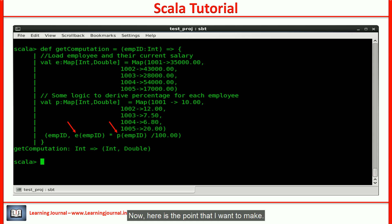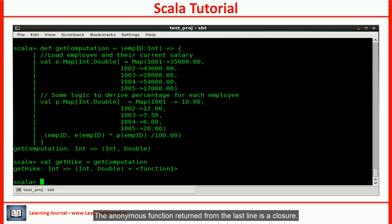Now, here is the point that I want to make. The anonymous function returned from the last line is a closure. It uses two free variables: e and p. When we returned it from the getComputation, it carries the state of the e and the p with it.